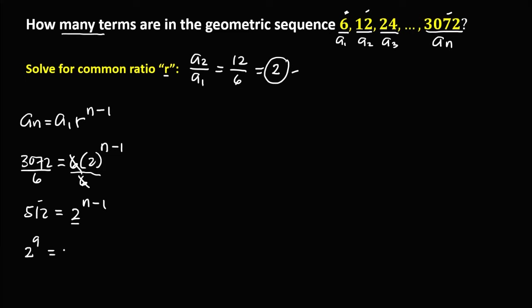So 2⁹ = 2^(n-1). Since the bases are equal, we can equate the exponents: 9 = n - 1.